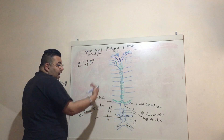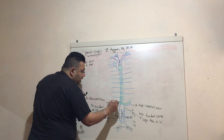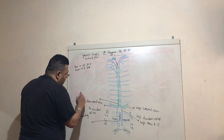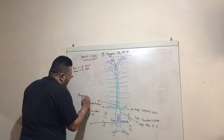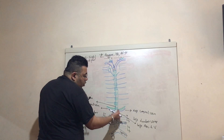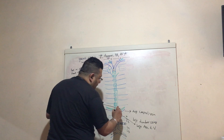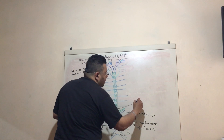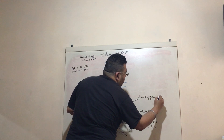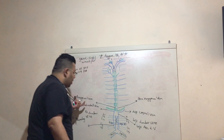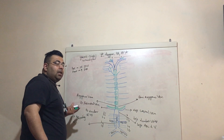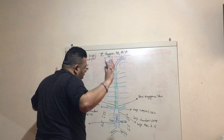The ascending vein goes up, connects with the subcostal vein, and travels up. On the right side, this forms our azygous vein. On the left side, when this structure connects and travels up, it is known as the hemi-azygous vein — 'azygous' meaning single or without any partner.